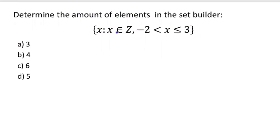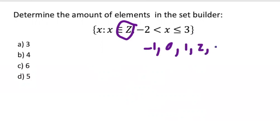The next example has the same range but X is an integer. Integers include negative and positive numbers, so starting above negative two we have negative one, zero, one, two, and three — three is included because of the equal sign. That gives five elements, so the answer is D.